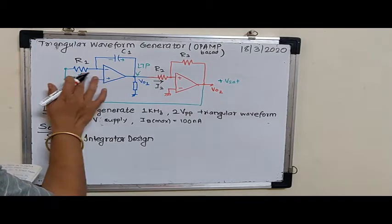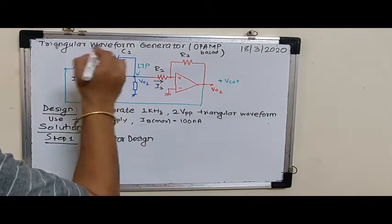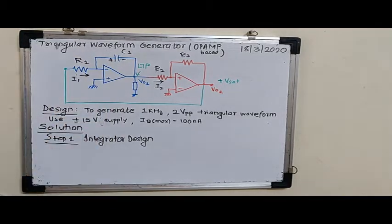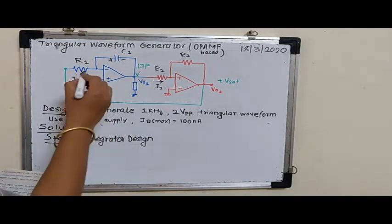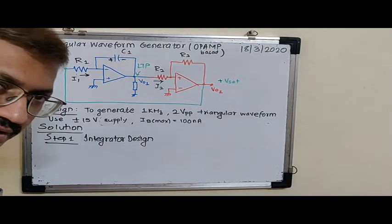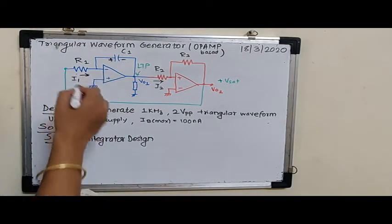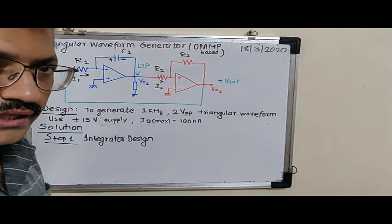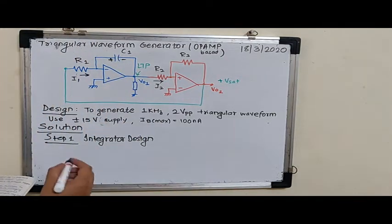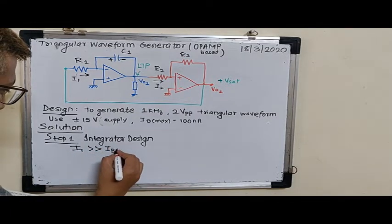First of all, we have I1. We have a specific requirement for I1 because I1 is supposed to be far more greater than IB max. So we start, always we start, most of the designs we have seen, saying that the current flowing here into this R1 is far more greater than IB max. So I will assume I1 to be far more greater than IB max.